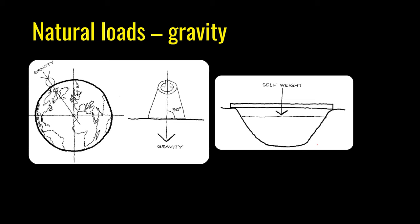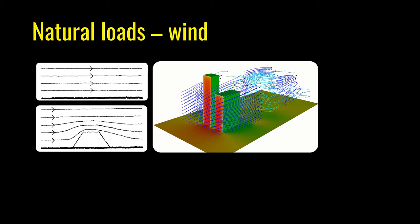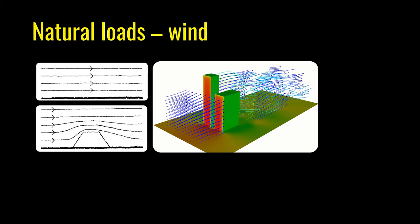All structures are subjected to gravity loads — they act through the body toward the center of the earth, but locally can be assumed to be vertical. A wooden plank across a bridge transfers load from the plank to its supports. Wind occurs due to changes in atmospheric temperature; all structures must resist wind forces, and near ground level wind flows along the surface.